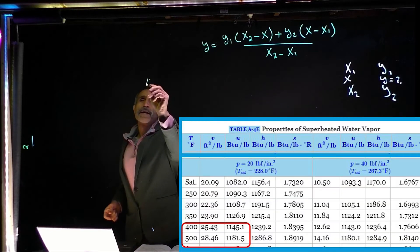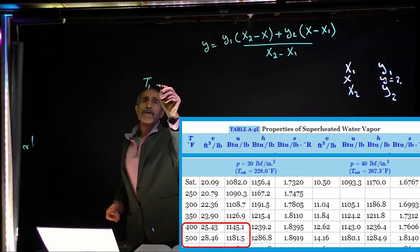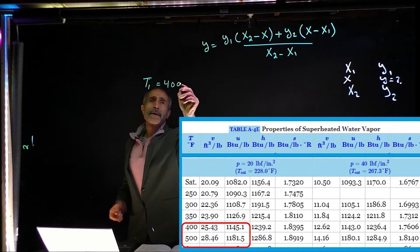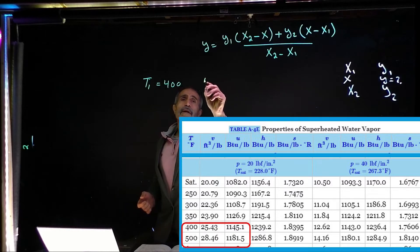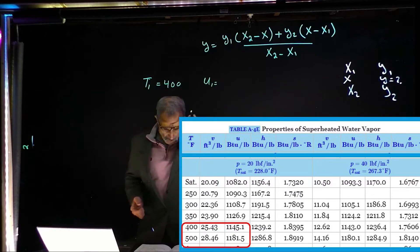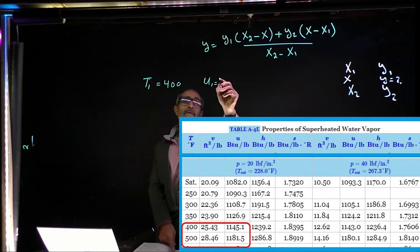I got a T1, temperature 1, which is about 400 degree in a table, correspond to u, comes out to, u1 comes out to 1145.1.